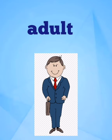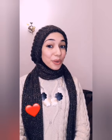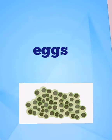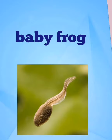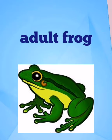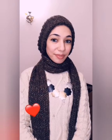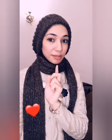Now with the stages of the frog's life. We learned before that the frog can live in water and on land. The frog begins its life as eggs in water, then a baby frog in water, then an adult frog that can live in water and on land.